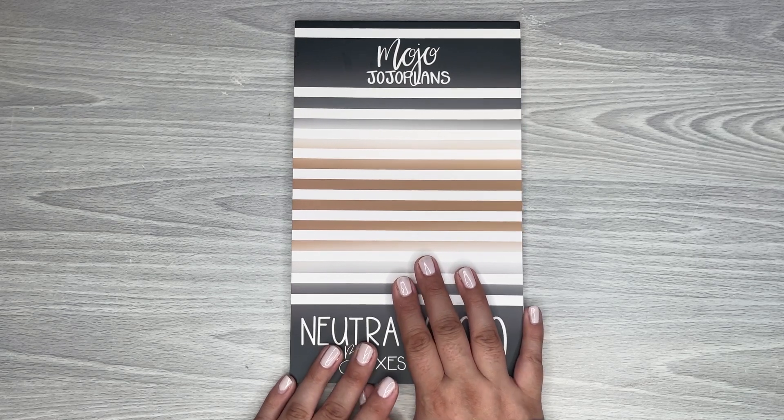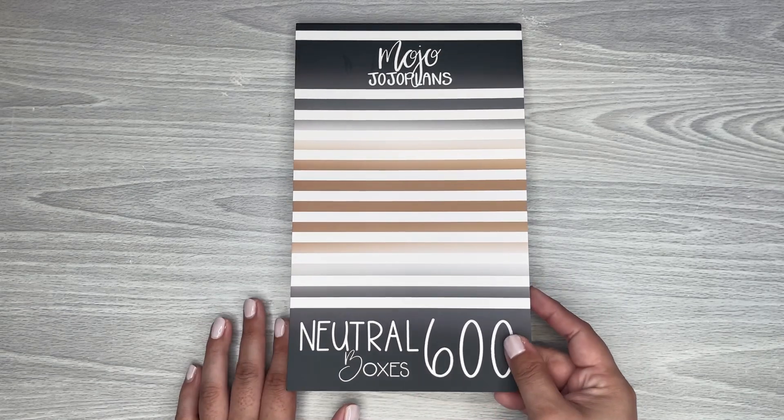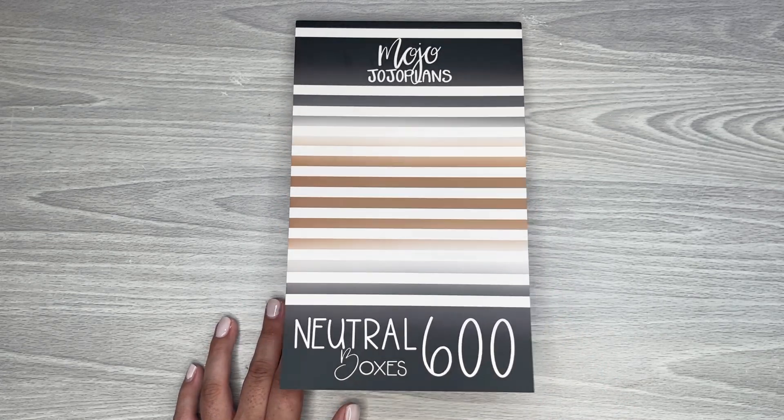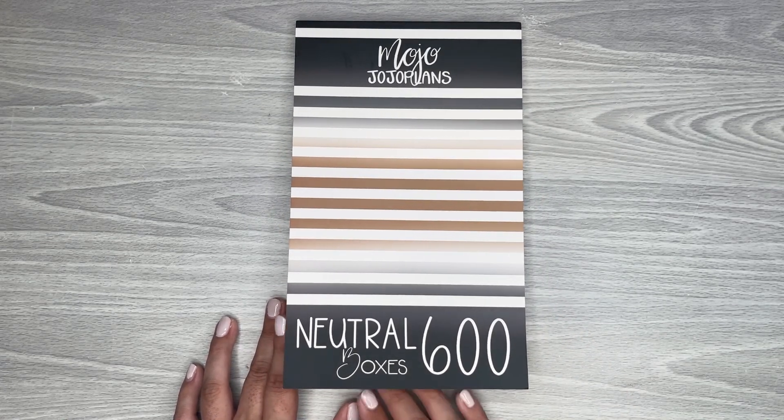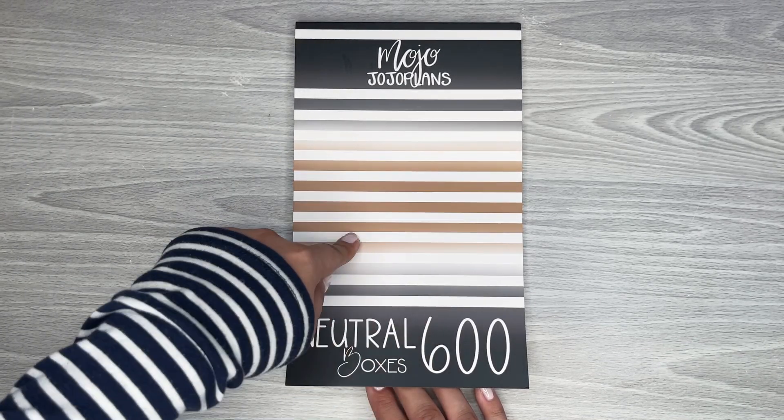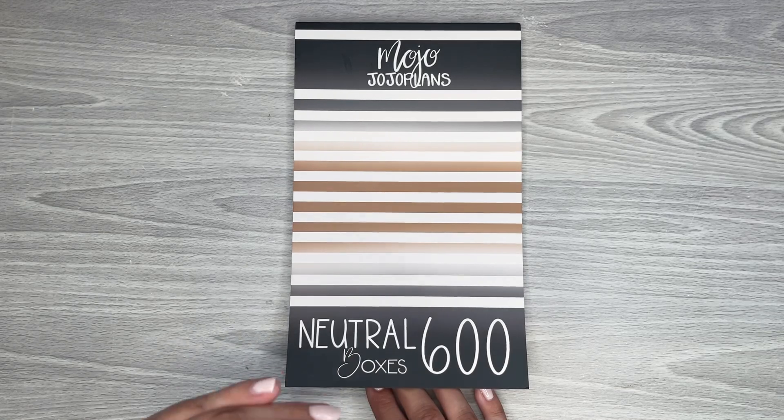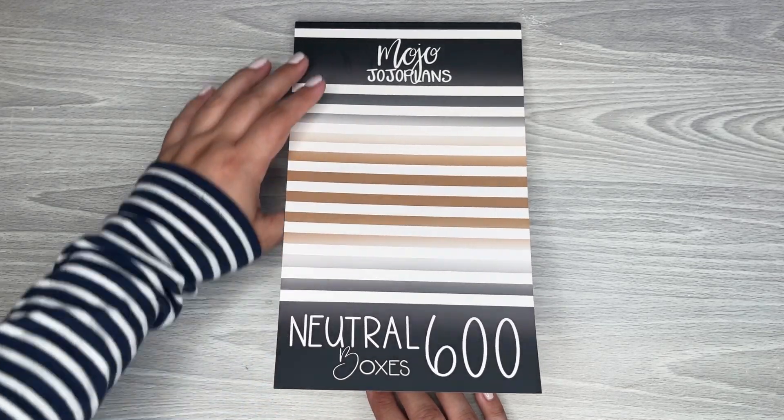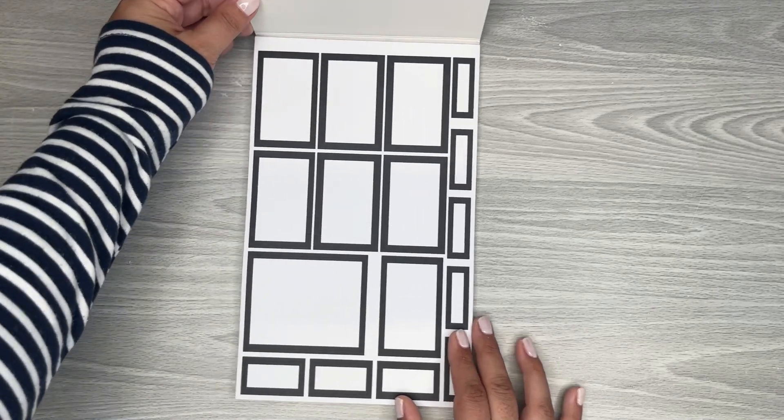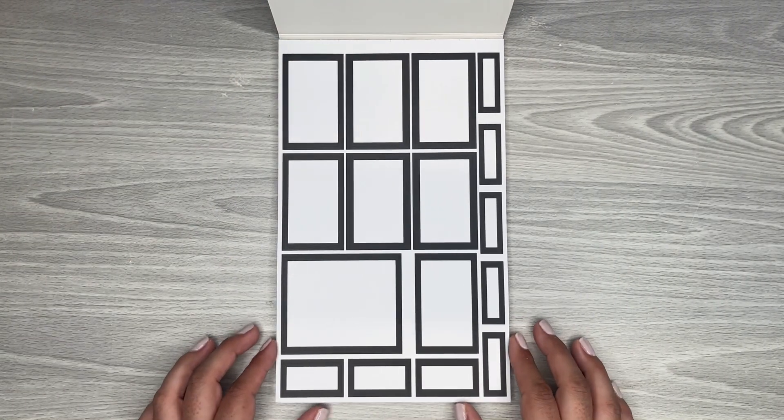But yeah, I'm just going to flip through this awesome new book from Mojo Jojo Plans. Like I said, it's neutrals, which I love. I love neutrals. And there's some colors that I don't ever really see in Happy Planner sticker books. So very excited to have all of these color options. Yeah, just super excited about this. Of course, black boxes to start off with.